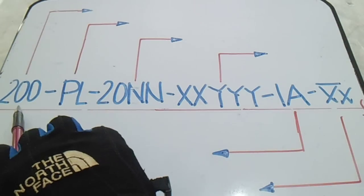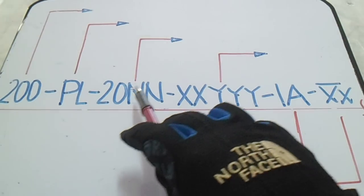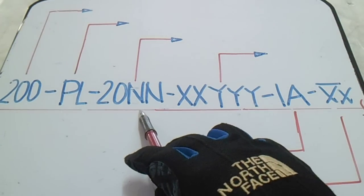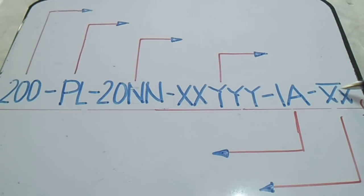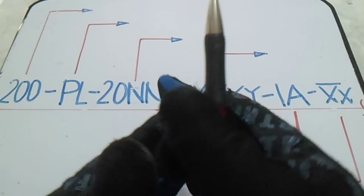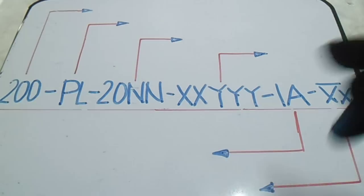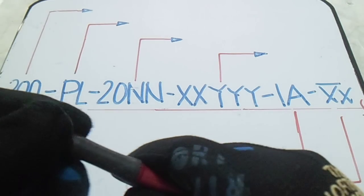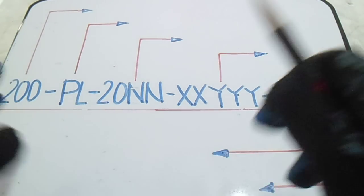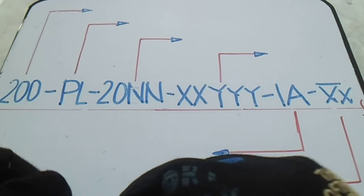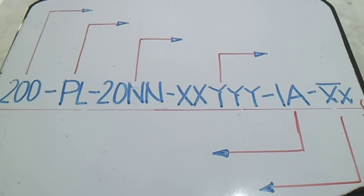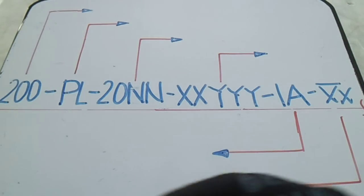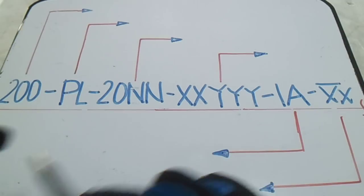I will show you what is the meaning of 200, what is the meaning of VL, what is the meaning of XX, IA, and this XX. Different companies may have a different design or different procedure, but you must have an idea of the meaning of this line number. So we have a line here — this is called a line in isometric.